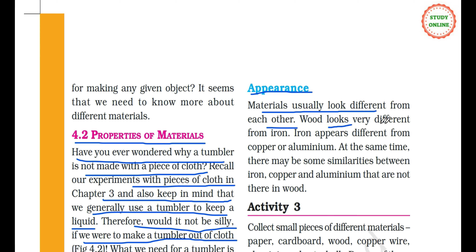Wood looks very different from iron. Jo wood hoti hai wo iron se different hoti hai. Iron appears different from copper and aluminium. Aluminium is white in color, copper is golden in color, and iron is black in color — so there is a difference in color as well.